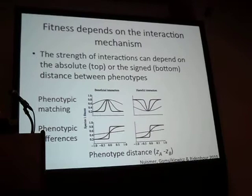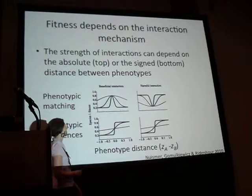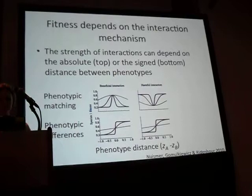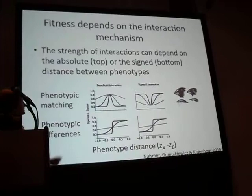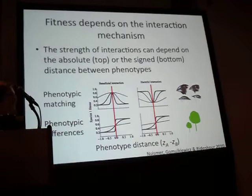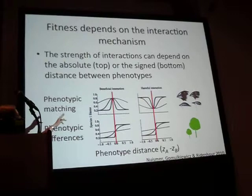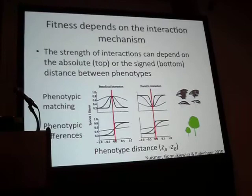On the x-axis you can see the phenotypic distance between the phenotypes of the two species, and its effect on the fitness of the focal species. The top curves represent a case like character displacement, and the bottom row represents what leads to an arms race. When you have matching phenotypes — a phenotypic difference of zero — in the top row you have the maximum effect on fitness, but in the bottom row the maximum effect on fitness occurs when there is a high amount of difference in phenotypes.